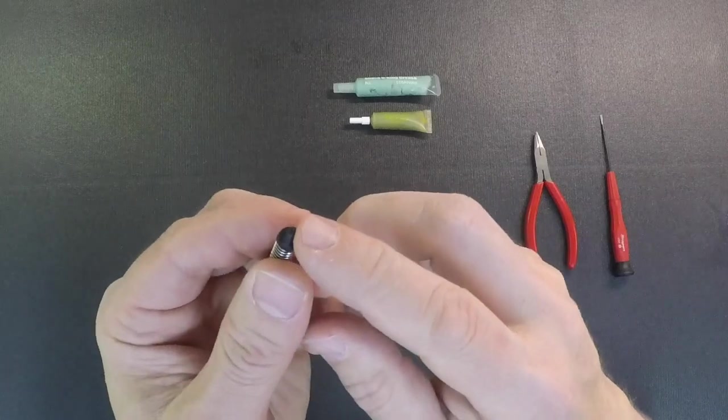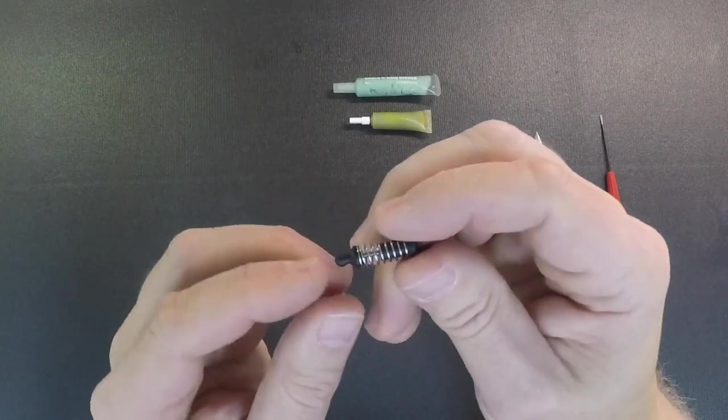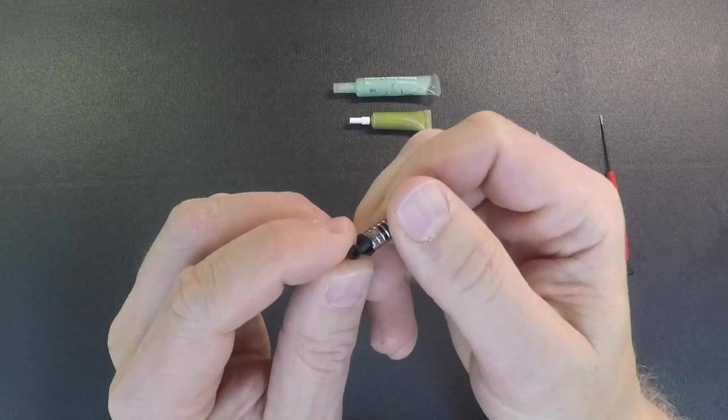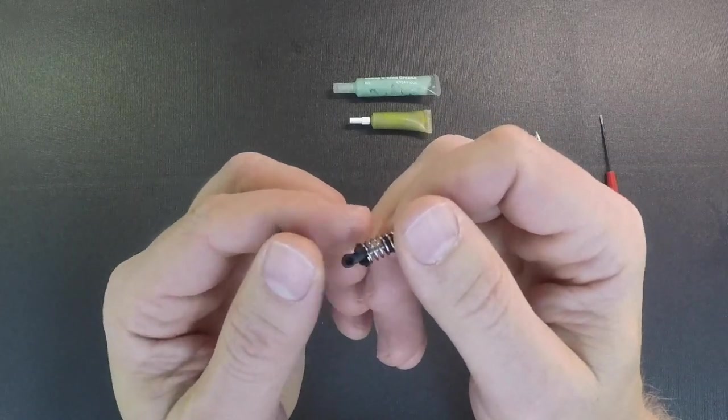When you take the shock off the car, you'll take the screw off the top, off the frame, and then you can just turn the shock sideways and it will pop off the ball stud on the bottom.